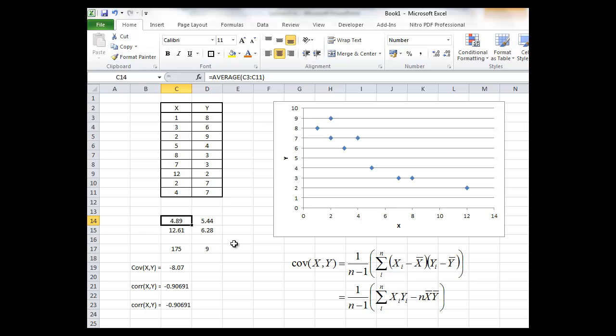Now these two formulas here for the mean and the variance are just carried across to calculate these same statistics for the random variable y. So we have them for the random variable x and the random variable y.